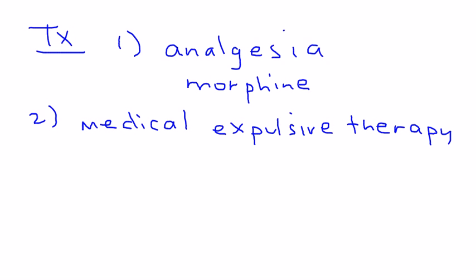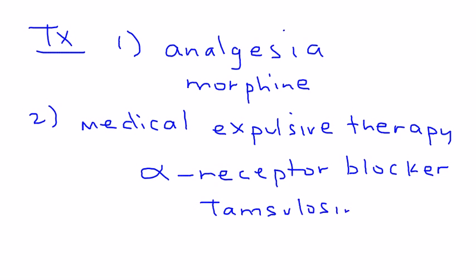The medication that's most commonly used is called the alpha receptor blocker. The most commonly used one is tamsulosin. What this medication does is it allows a dilation and it facilitates the stone passing.